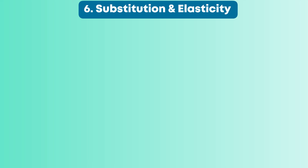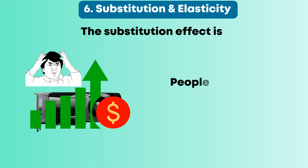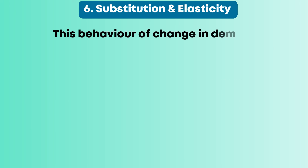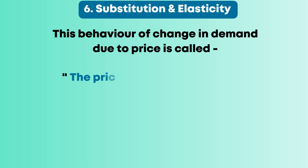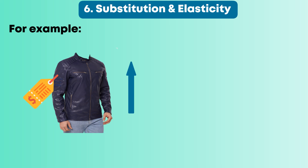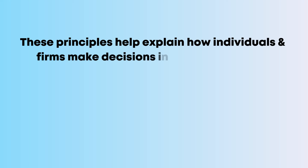Six, substitution and elasticity. The substitution effect is when prices are higher than one can afford, people may prefer a cheaper substitute. This behavior of change in demand due to price is called the price elasticity of demand. For example, if the price of leather jackets rises, consumers will prefer to buy woolen overcoats to shield themselves in winter. These principles help explain how individuals and firms make decisions in the marketplace and how markets reach equilibrium.